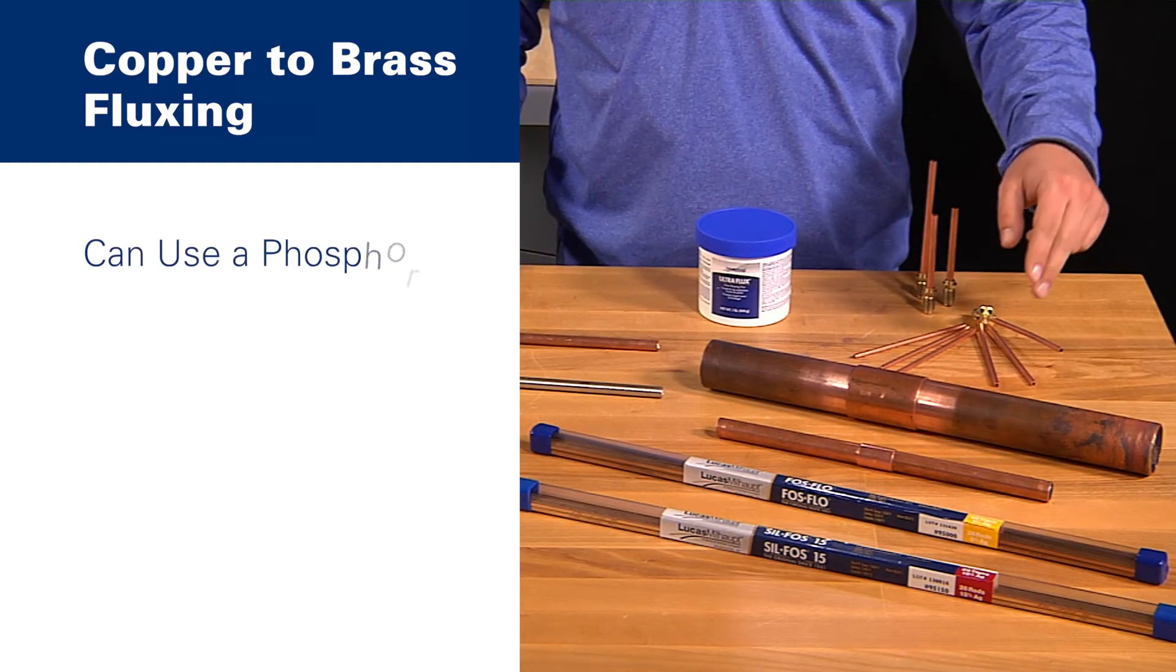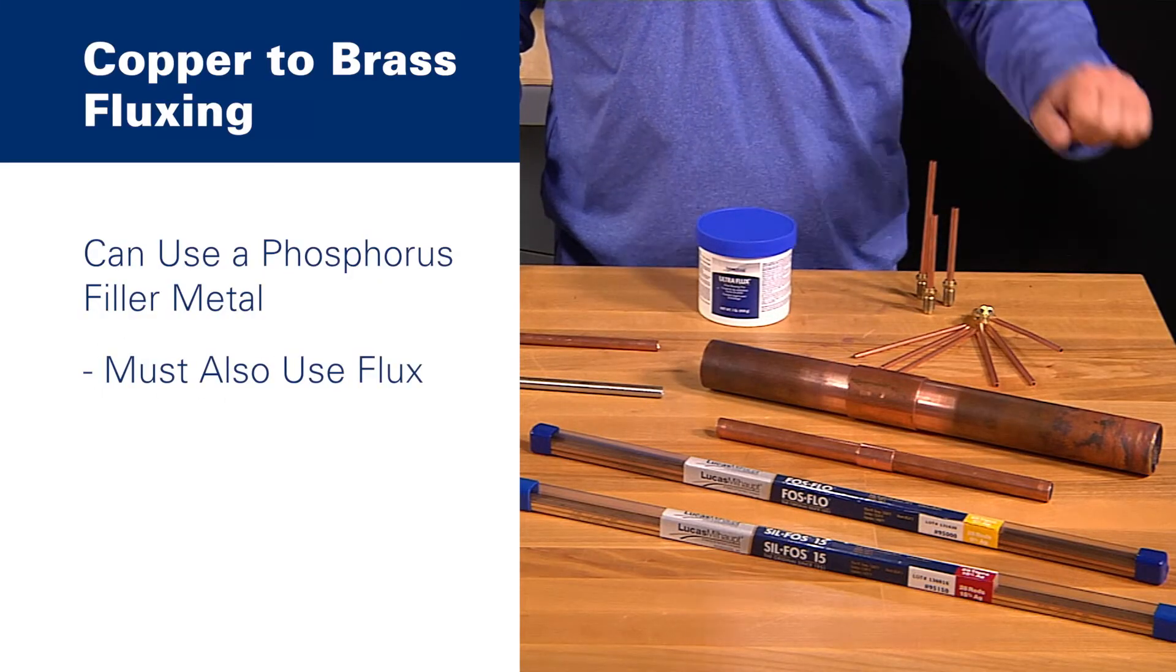When braising brass, you can use a phosphorus-bearing alloy, but you have to use flux as well.